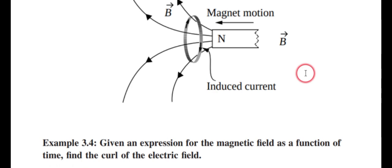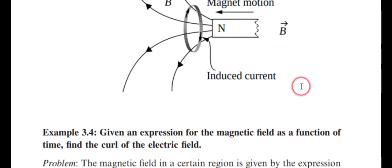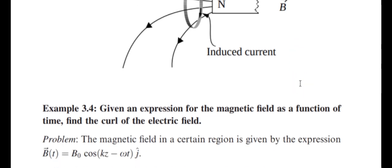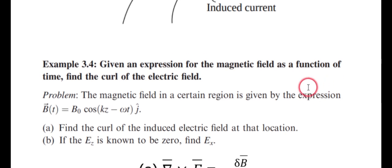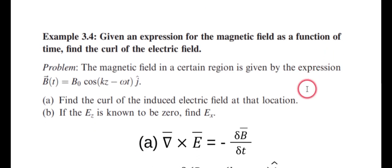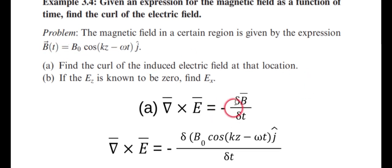He doesn't give any problems in the homework of the differential form of Faraday's law. I don't know why. But he gave an example that's kind of fun. So let's do that one. He said the magnetic field in a certain region is given by the expression blah, and notice it's only in the j hat direction. So part A was find the curl of the induced electric field at that location. Well, we just write down what the equation is, and we put in what he gave us.